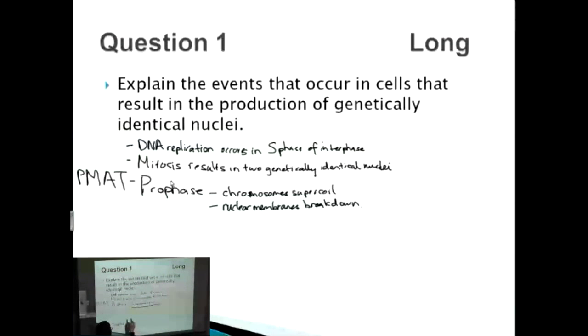So telophase. Telophase is easy. It's exactly the opposite of here. So chromosomes supercoiled back in prophase. So chromosomes uncoil in telophase. If the nuclear membranes broke down in prophase, they're going to reform in telophase.